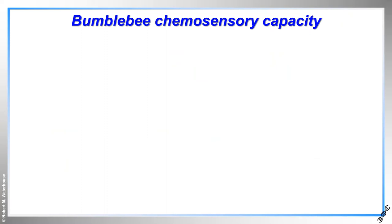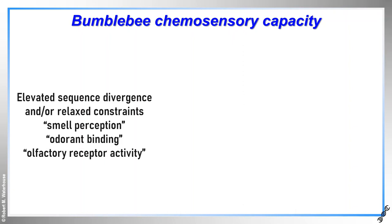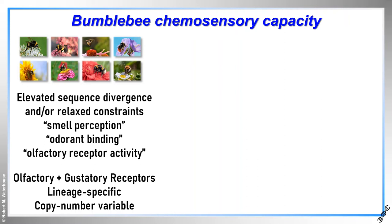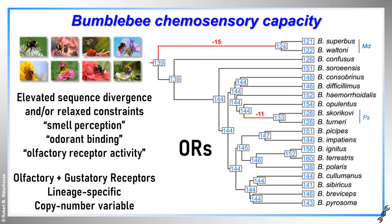Looking first at chemosensation, the olfactory receptors consistently showed some of the highest levels of sequence divergence and relaxed constraint amongst all functional categories. Phyletic profiles also showed both olfactory and gustatory receptors to be highly lineage specific and copy number variable. While the chemosensory gene repertoire sizes are nowhere near as large as in ants, this variation could reflect different feeding preferences or foraging strategies in these different bumblebee species. Two potentially very interesting loss events amongst olfactory receptors include species inhabiting high altitude plateaus where there is low floral abundance and diversity, and for the cuckoo bumblebees that rely on their hosts to do the foraging.